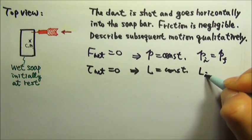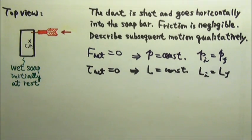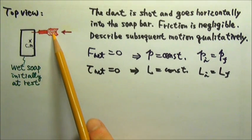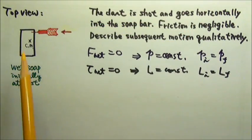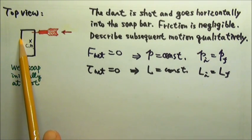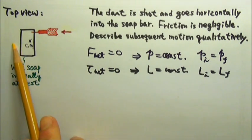That means the initial and final angular momentum would be equal. Initially, the wet bar of soap is at rest with no angular momentum. The dart is the only one with angular momentum at the beginning, and the dart goes that way, which means that the initial angular momentum is a counterclockwise angular momentum. So the final angular momentum should also be counterclockwise.